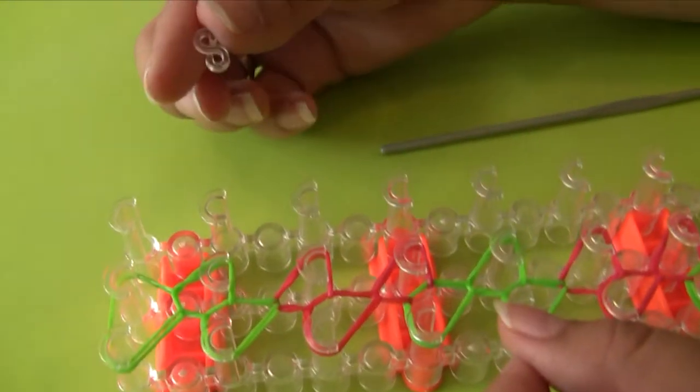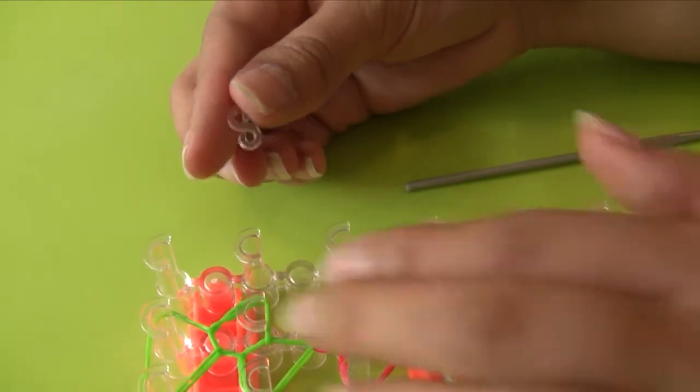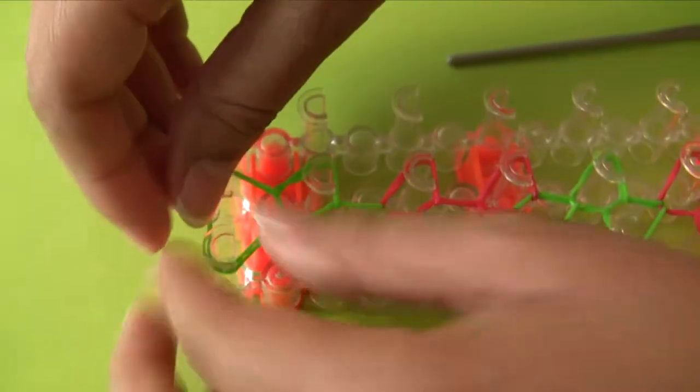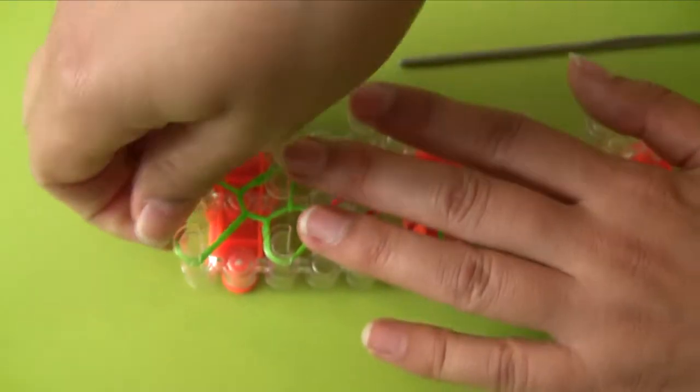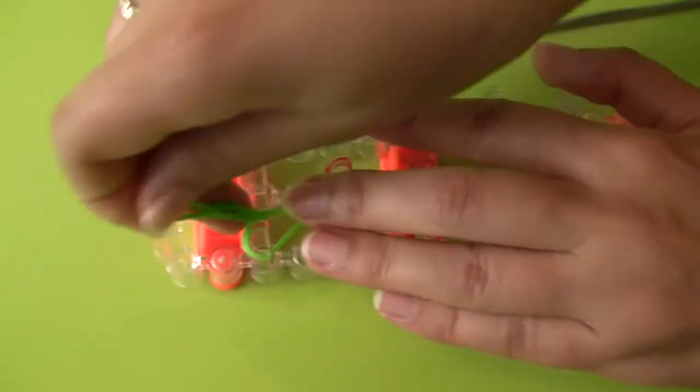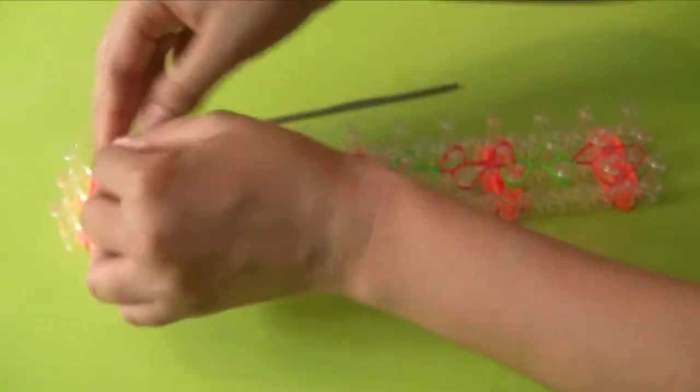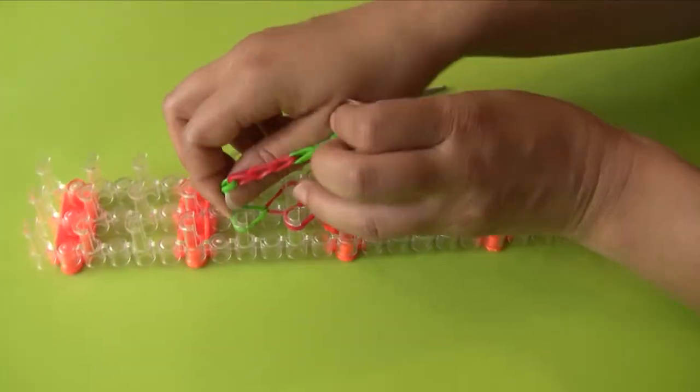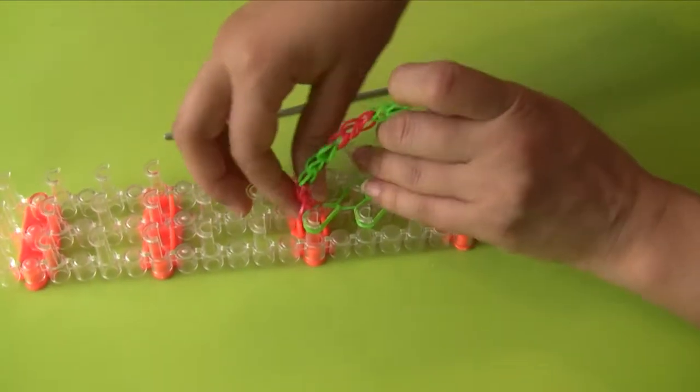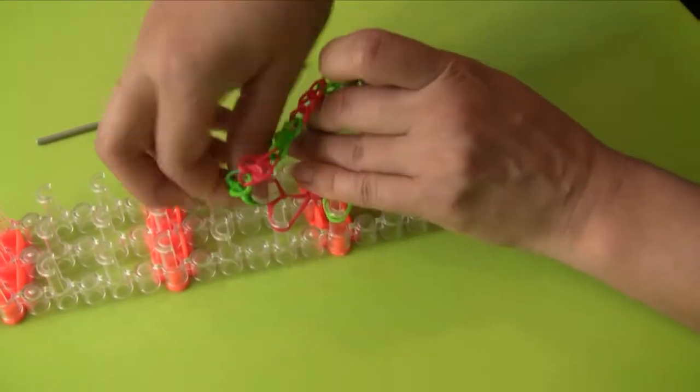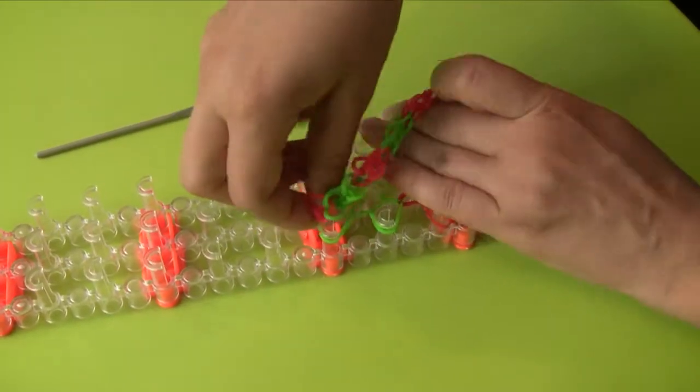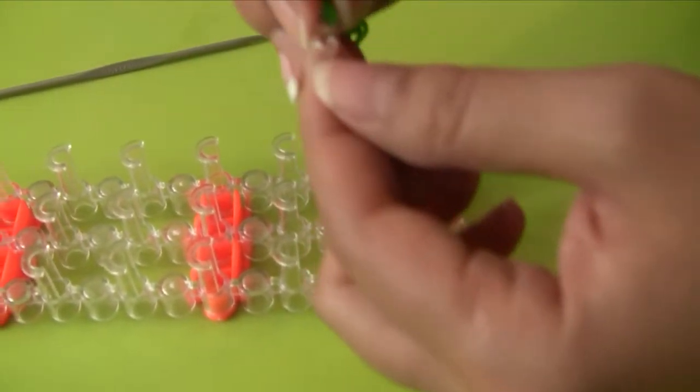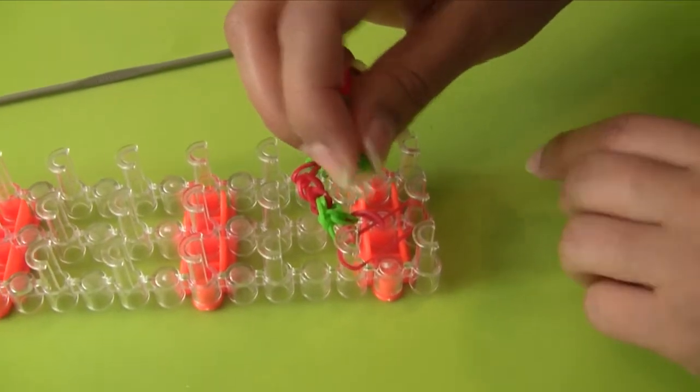I'll attach a clip to this stretched band and remove my work from the loom board. I will now finish my bracelet by closing it off with the clip.